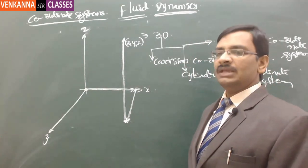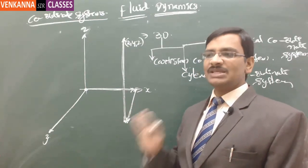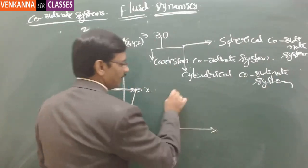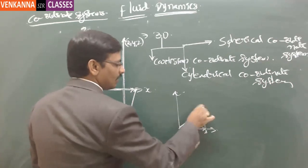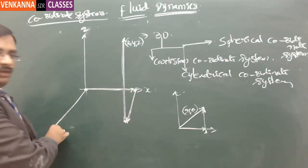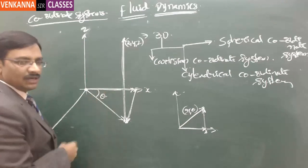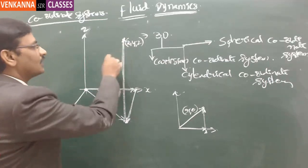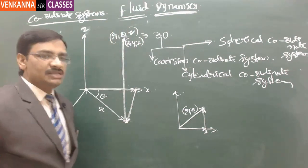Coming to the cylindrical coordinate system: just imagine the xy plane treated as a polar coordinate system. To identify a point, this x and y are now treated as r and theta. On the xy plane, you draw a straight line making an angle of theta and with length r, and the height remains z. So the point can be represented as r, theta, z. This is the cylindrical coordinate system.